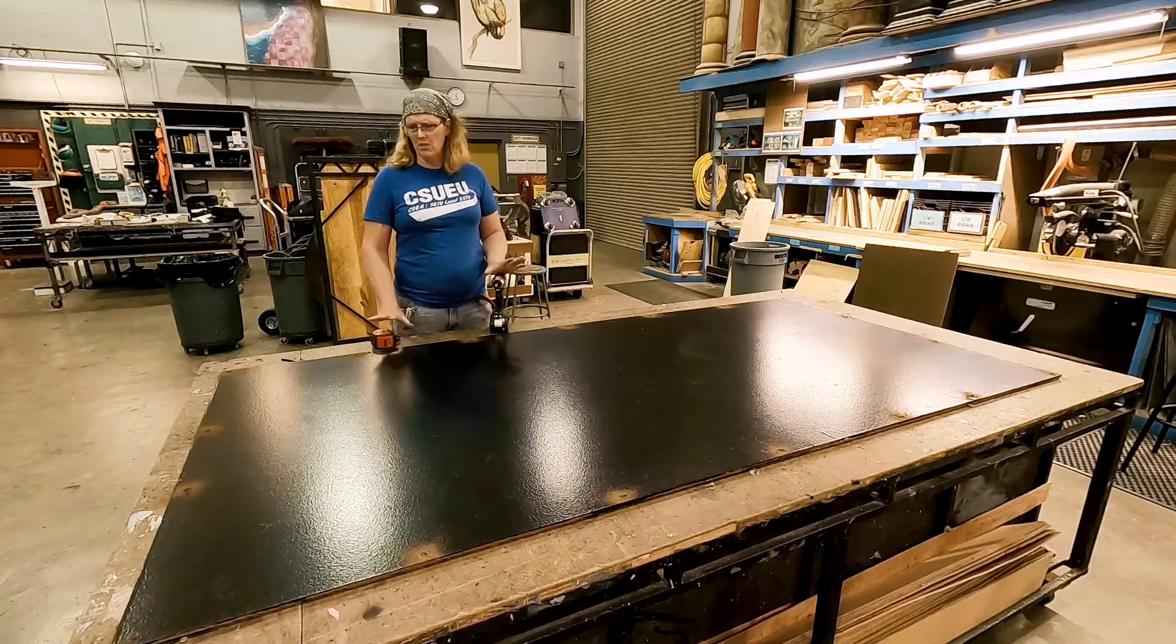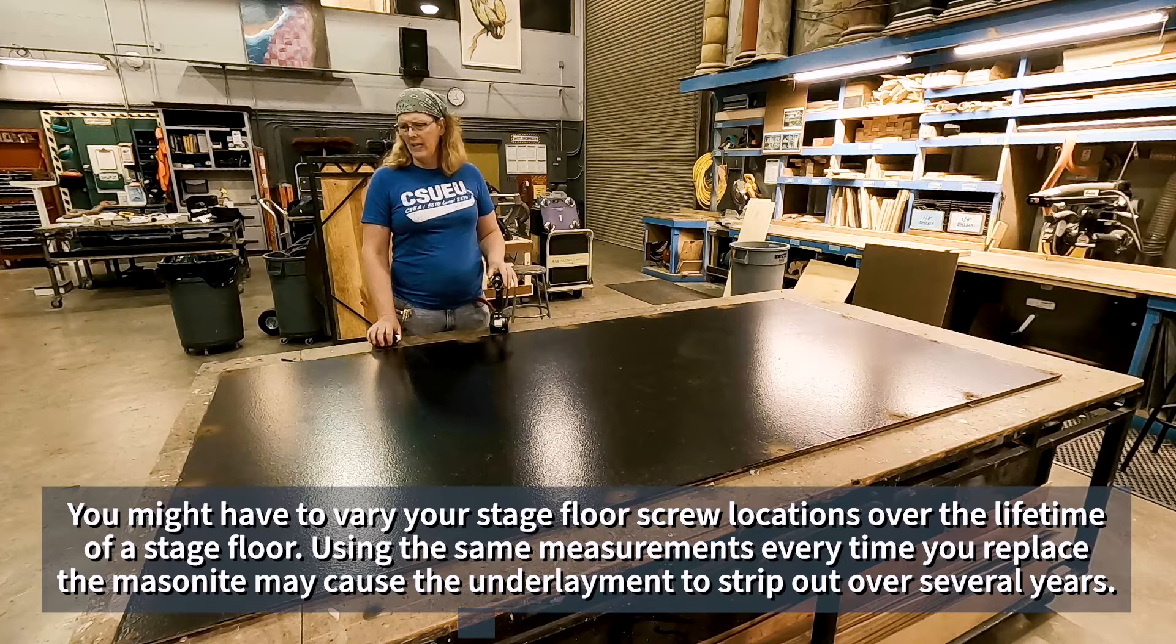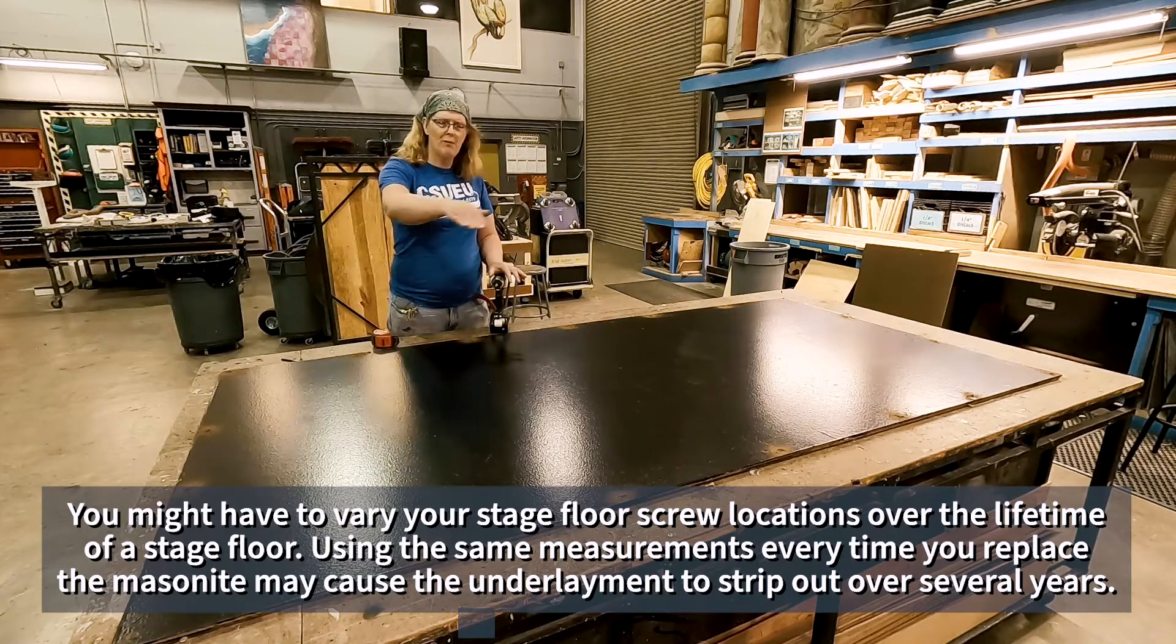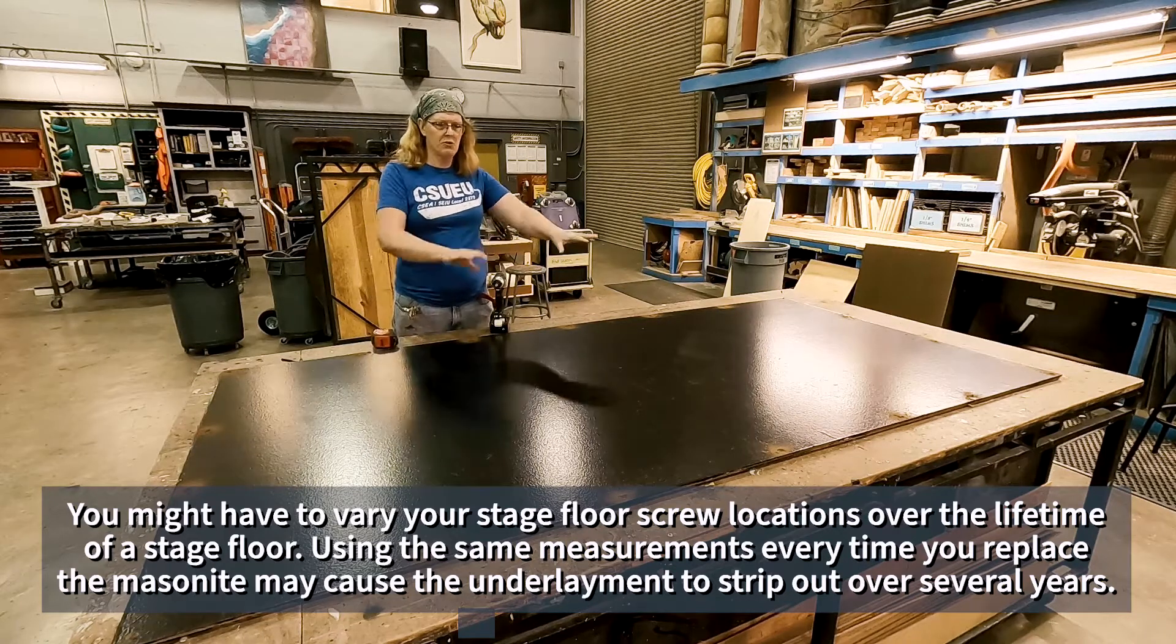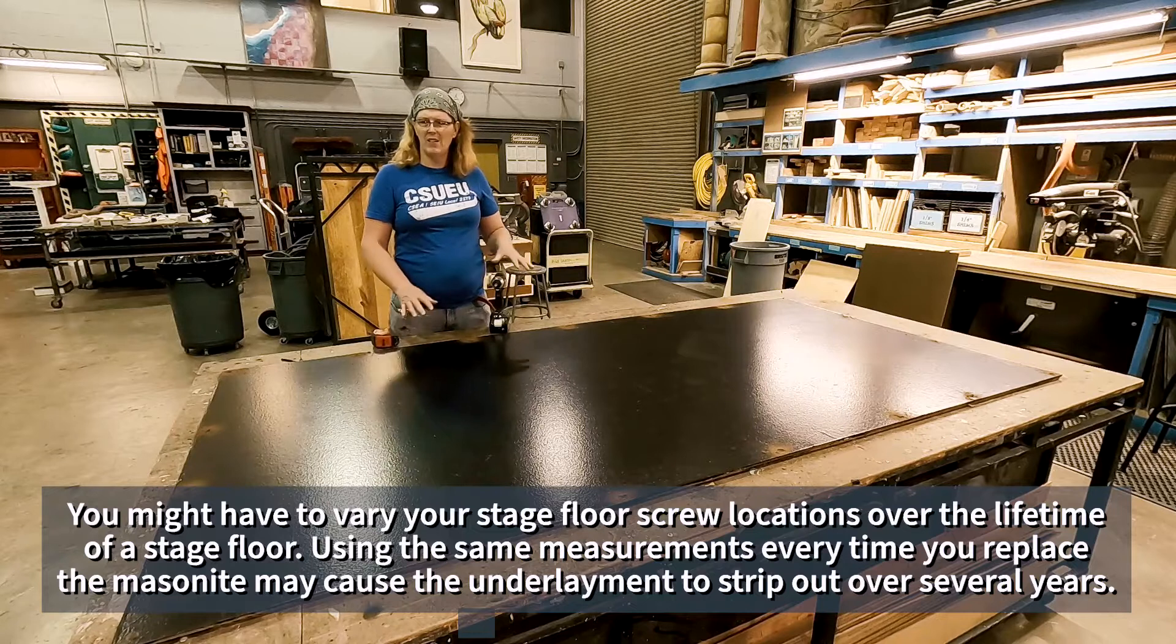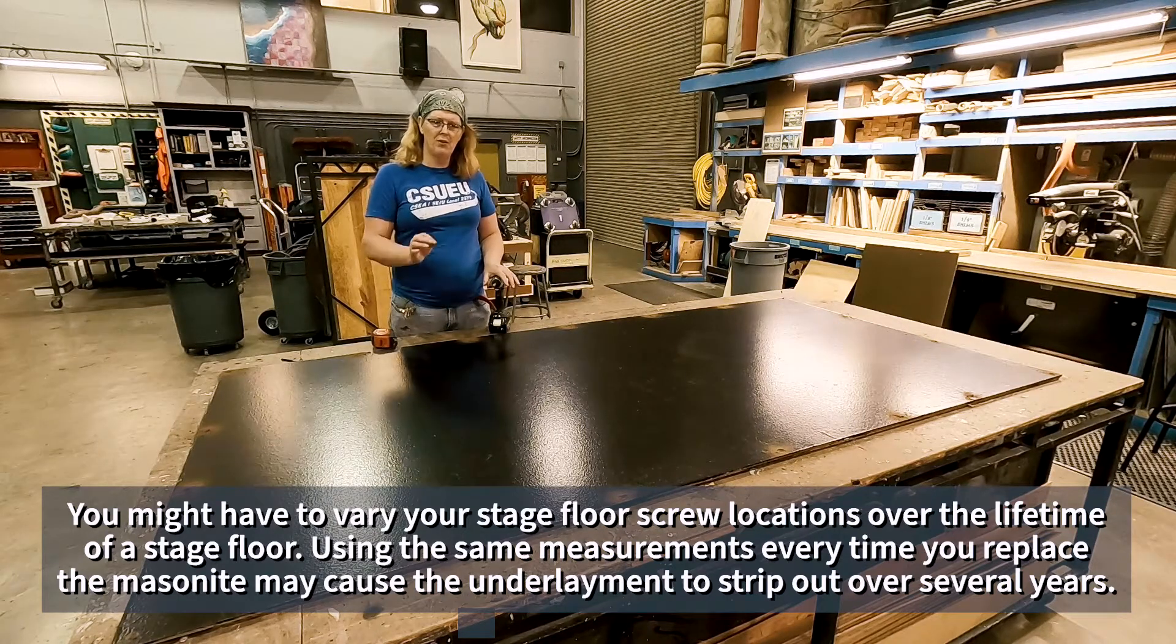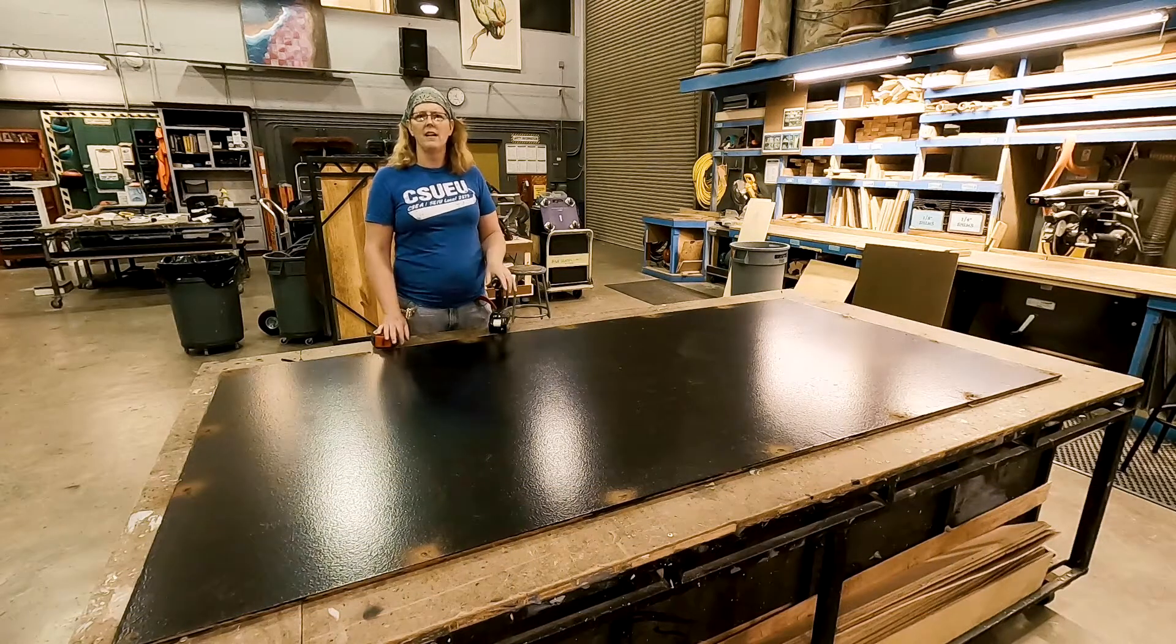We're just going to walk on it. It's going to get several coats of paint over its lifetime. It just needs to hold down and be secure, so we just do the perimeter when we're doing masonite for the stage floor, and we don't put any screws in the middle. We don't do any extra than this until we put it down.